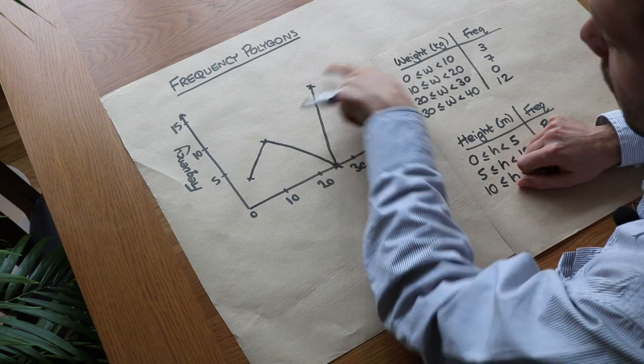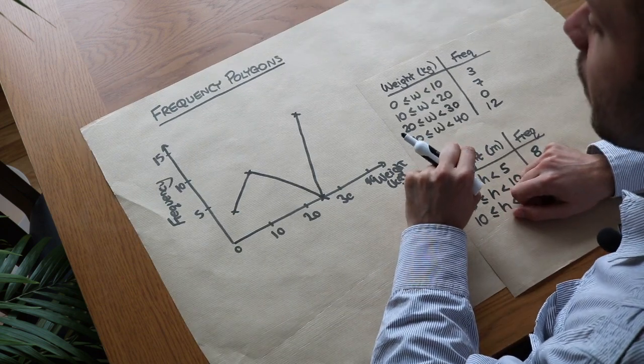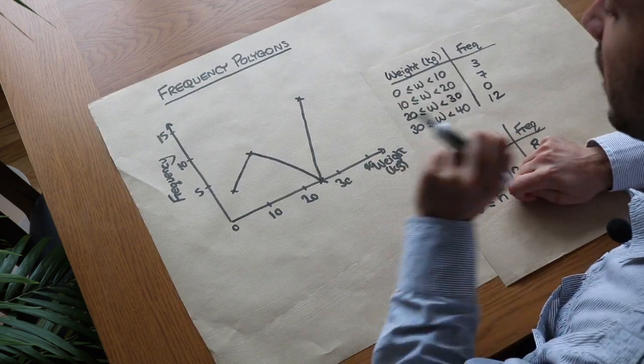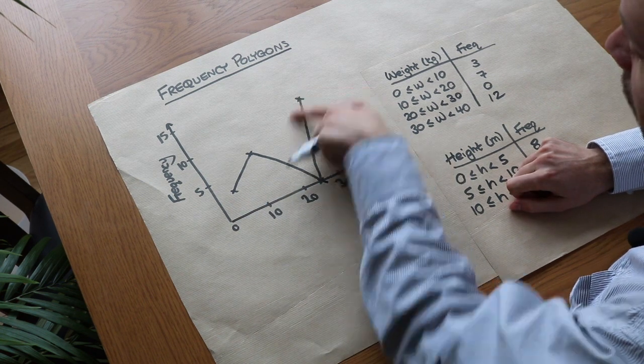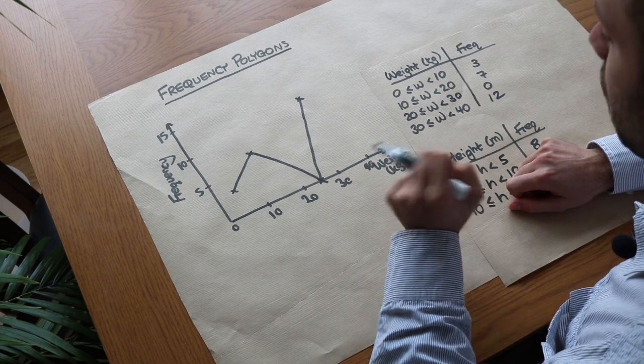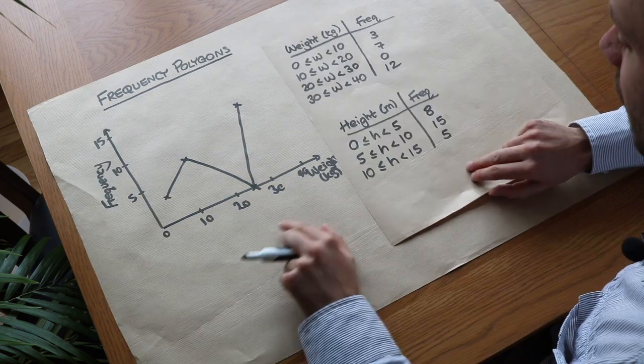Mistakes that students make is that sometimes they join this to the origin—you should definitely not do that—and sometimes students join the first point to the last point. You shouldn't do that either. And I've seen exam questions before where they actually get you to critique a student's drawing, and you might sometimes see a line here or see a line joining those, and that's what you should spot and say what went wrong.